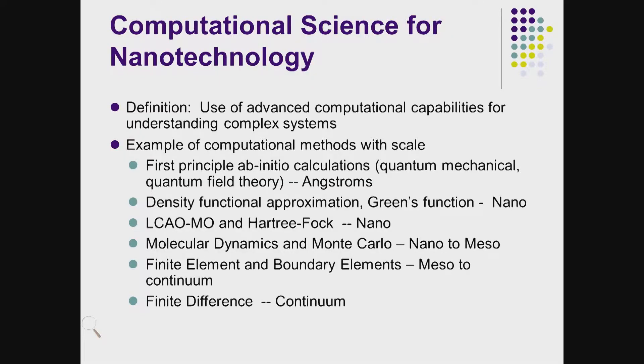Angstrom is 10 to the power of minus 10 of the meter. By adding more angstroms, we go from angstrom size to micrometer or micron size, 10⁻⁹ of the meter. With the further approximation of linear combination of atomic orbitals or molecular orbitals (LCAO-MO), we can apply the Hartree-Fock approximation to reach much larger scales.